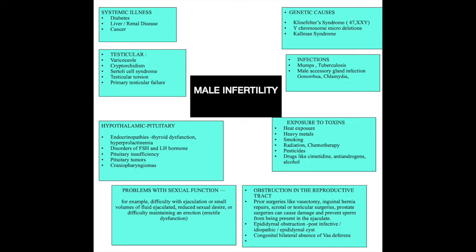Other causes can be diabetes, systemic illnesses like liver and renal illnesses, cancer, and testicular causes like primary testicular failure which can cause azoospermia or absence of sperms, varicocele, and cryptorchidism.